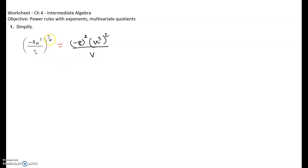u cubed must also be squared — both are on the numerator. The denominator has v, so keep the denominator as v and square that one too. Every expression must be raised to the power of two. So negative eight squared is negative eight times negative eight.